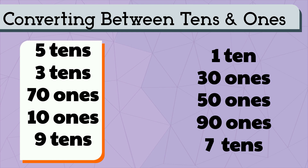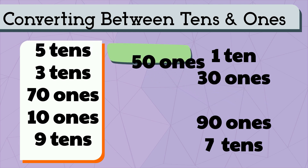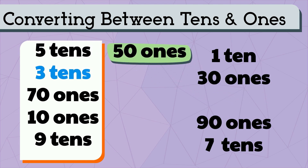Now let's try converting between tens and ones. Match the tens to the ones or the ones to the tens. Five tens is equal to fifty ones. Three tens is equal to thirty ones.